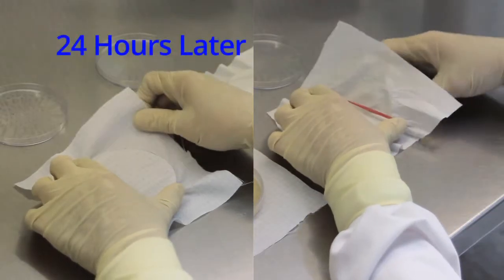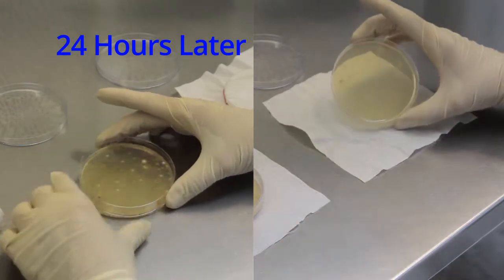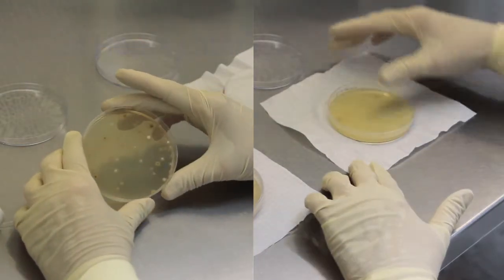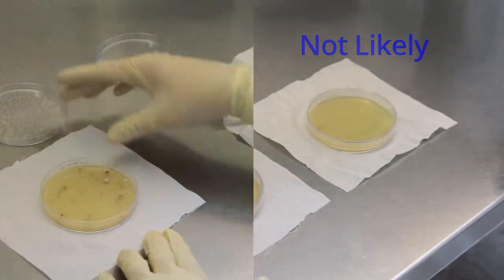The final problem with the test method is that the petri dishes are not incubated. This would make it very unlikely that colonies would grow sufficiently in 24 hours, as shown in the reenactment.